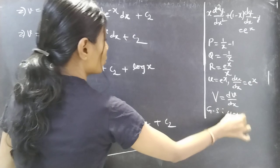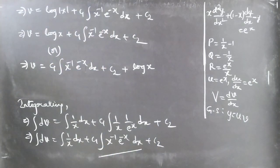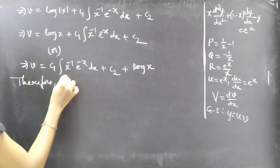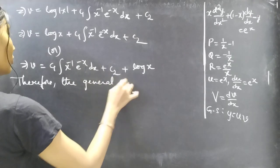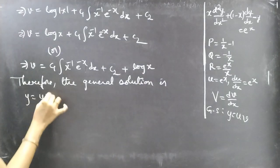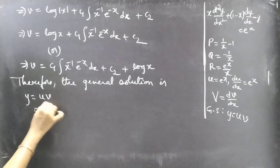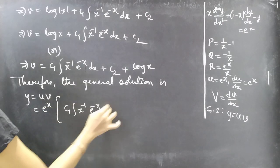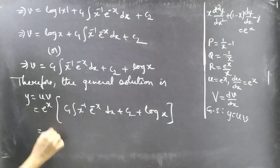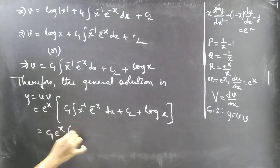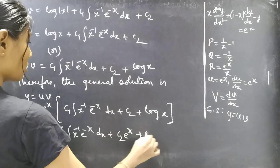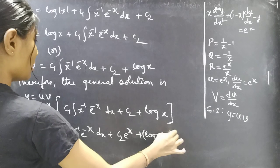Now we have both u and v, so the general solution is y = u · v = e^x · [C₁ · ∫x^(−1) · e^(−x) dx + C₂ + log x] = C₁ · e^x · ∫x^(−1) · e^(−x) dx + C₂ · e^x + e^x · log x.